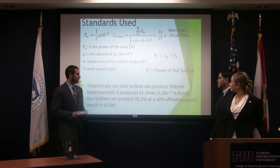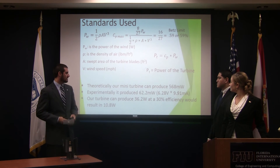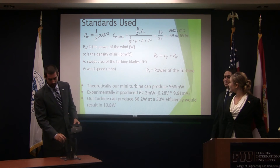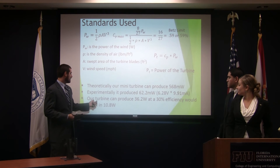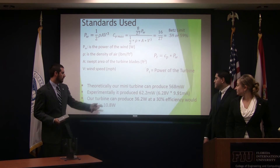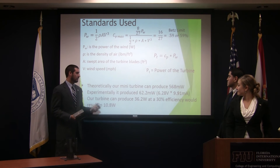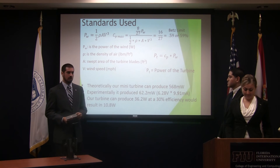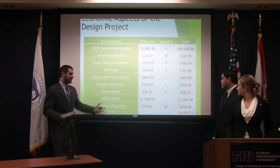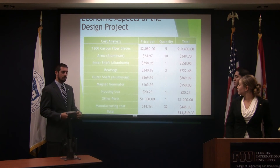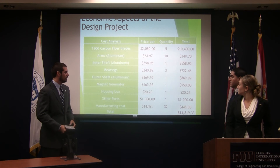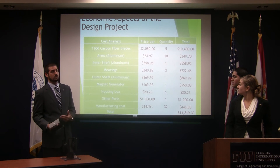We then experimentally tested it while it was in the turbine and got 62.2 milliwatts — about 11% efficiency from the design. We determined that our large-scale turbine, factoring everything in, would be able to produce 36.2 watts of electricity, but probably at 30% efficiency, so we'd get about 10.8 watts. It would cost approximately $15,000 to manufacture — we went online and picked out the lowest-priced components we could get, and this was the best we could come up with if we were to do this wholesale.